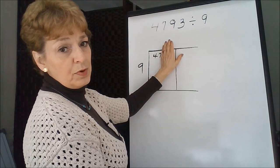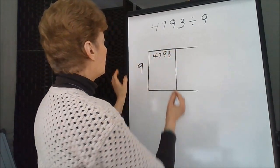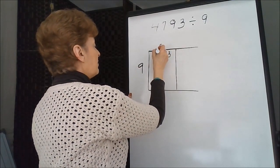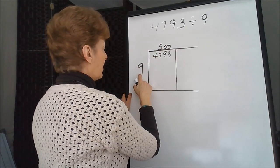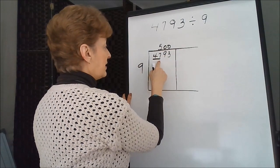9 divides into 47 five times. 5 times 4, or 5 times 9 is 45.